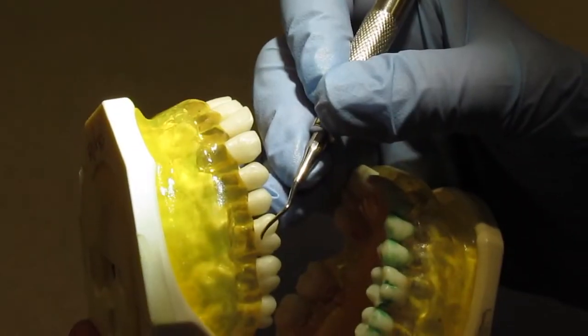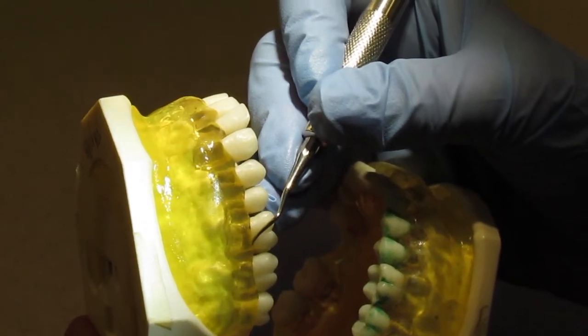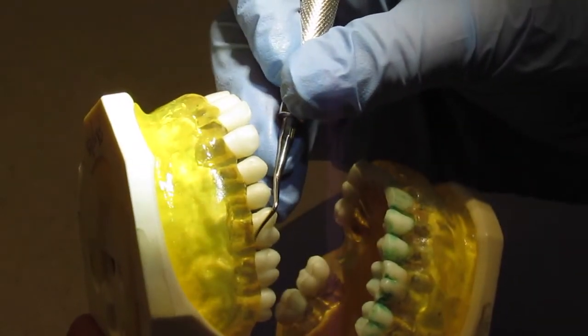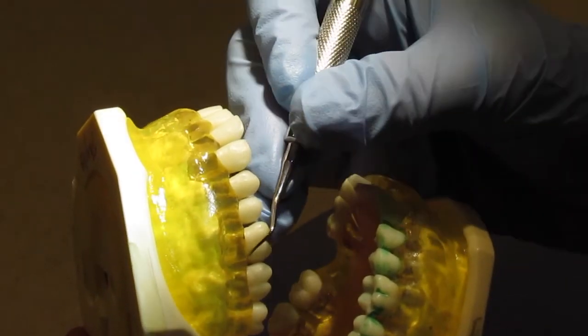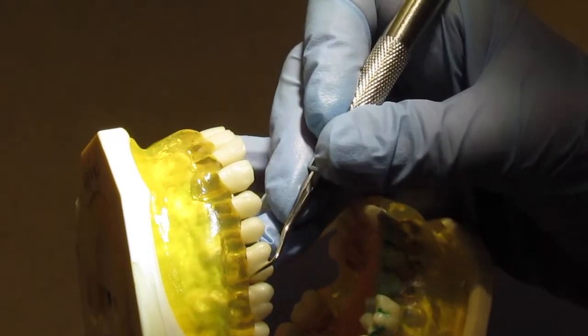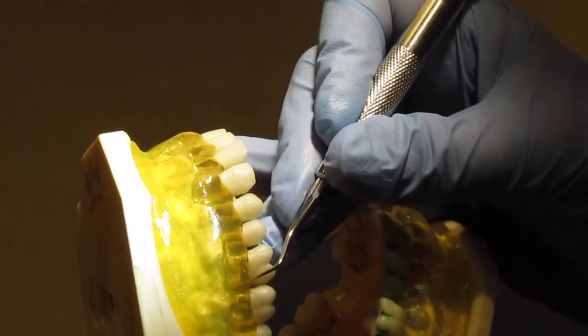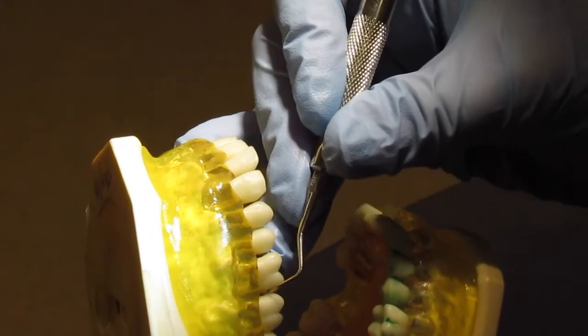Your fulcrum is going to be on the lingual occlusal. You're going to reach back with your secondary blade and be sure to raise your handle up a little so you close the blade. Initiate little up and down rocking strokes and then pivot toward yourself so that you bring the instrument into the distal interproximal area.